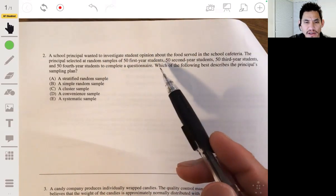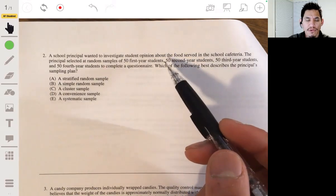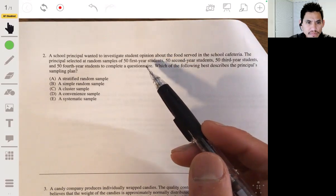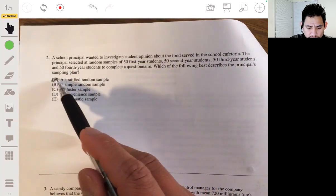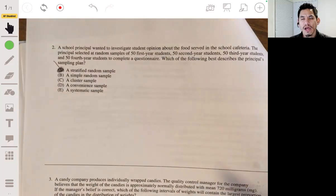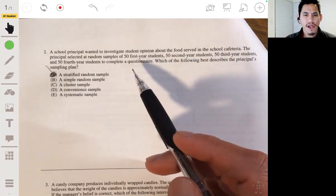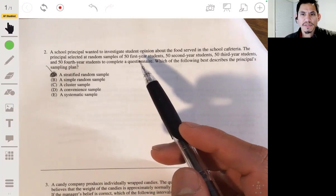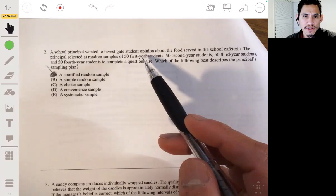Okay, so this is an example of a stratified random sample. The strata are the grade levels: freshmen, sophomores, juniors, seniors, or first year, second year, third year, fourth year. And we use strata when we have suspicion that there's a factor, in this case the age level or grade level, will have an influence on how they respond to the survey. So the strata would be the year of the students.